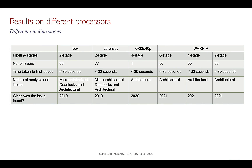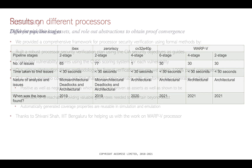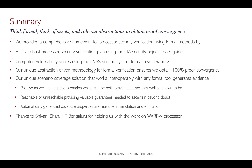Here is a quick glimpse of the results. A number of issues have been found over the years in IBEX, Ibex RISC-V, CV32E40P, and Warp 5. These are only some of the security bugs we are highlighting — other issues in CV32E40P are also listed on the Git. All results are available on our public Git, and it takes less than a minute to find these issues. In summary: think formal, think of assets, and roll out abstractions to obtain proof convergence. Our approach is extremely simple but very productive, effective, and reusable — a comprehensive framework for processor security verification using formal methods. We can compute vulnerability scores using the CVSS scoring system.